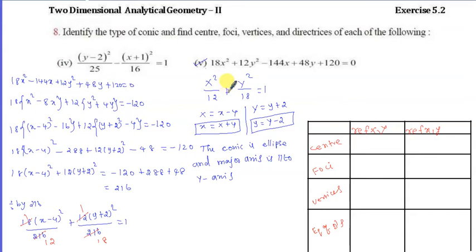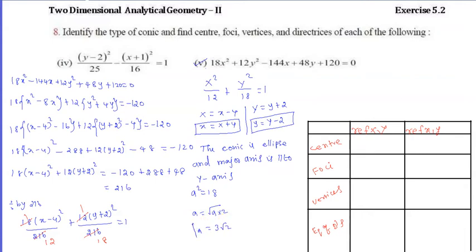The conic is an ellipse. The major axis is along the y-axis. a² equals 18, therefore a equals square root of 9 times 2, which is 3 root 2. And b² equals 12, therefore b equals square root of 4 times 3, which is 2 root 3.